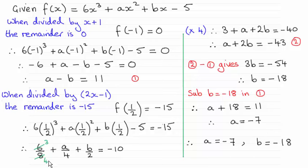And you'll notice here I've multiplied through by 8 to simplify it down to a plus 2b equals minus 43.